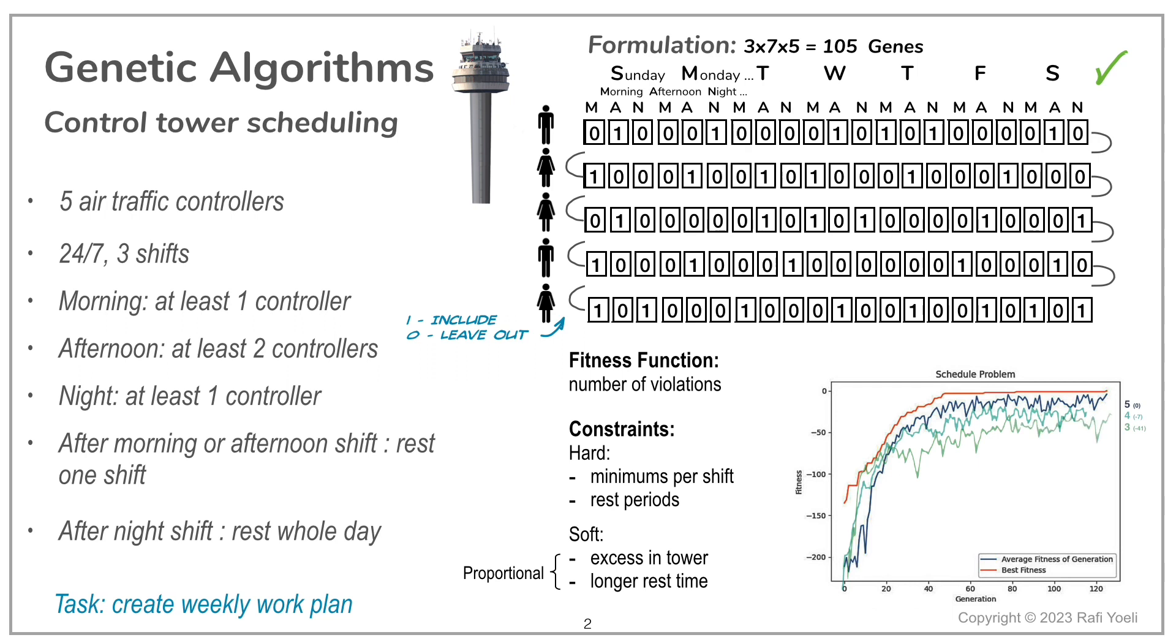What would happen if we add one person so have 6 instead of 5? Brown line, quicker convergence to a solution, but of course can't do better than 0 violations, which we already got with 5 controllers.